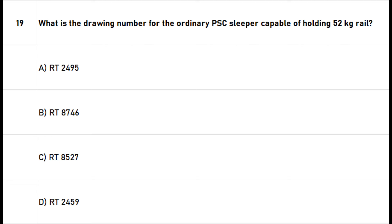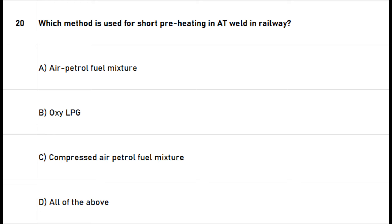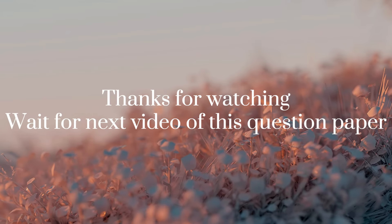Question 20: Which method is used for short preheating in AT weld in railway? A. Air petrol fuel mixture. B. Oxy LPG. C. Compressed air petrol fuel mixture. D. All of the above. The right answer is option D: All of the above.